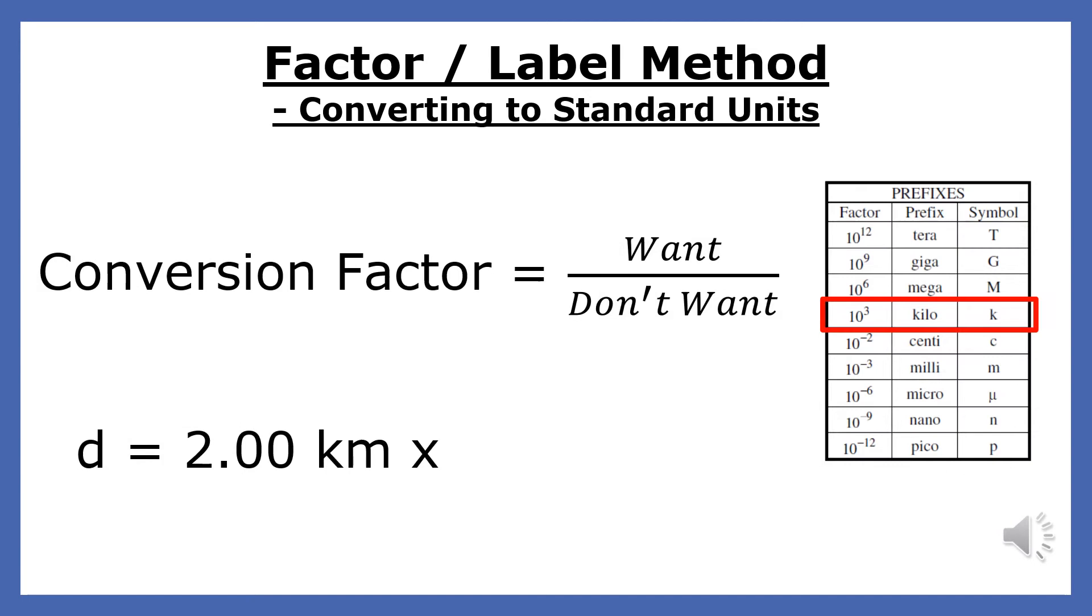The technique we will use to convert a number to standard units is called the factor label method. This method involves creating a ratio that will eliminate the variable we don't want and replace it with the variable that we do want. We put the variable we want in the numerator and the variable we want to eliminate in the denominator.